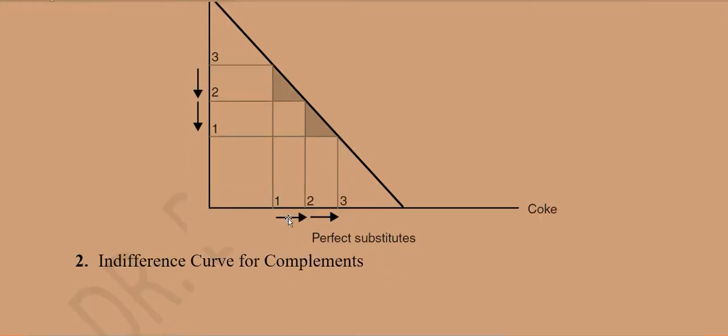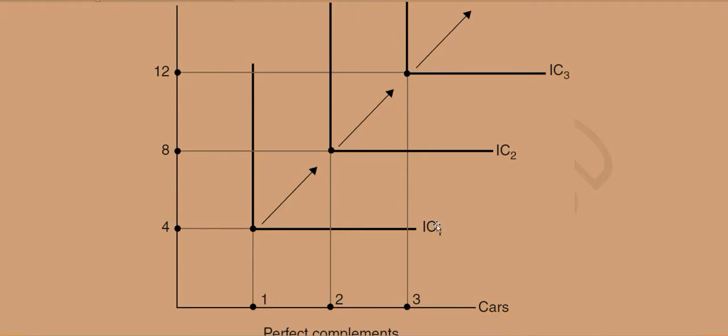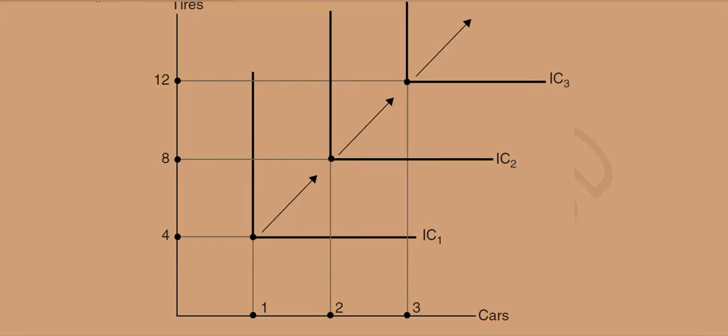Then there is another case which is the opposite of what we did, that is the complements. The indifference curve for complements will now be considered. Here you can see a set of indifference curves that are neither a straight line nor a curve, they are actually L-shaped indifference curves. This is from where it starts, going in this direction, then it takes a turn and we get an edge over here, and that's where it goes towards the right. So it becomes an L-shaped indifference curve.